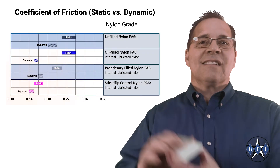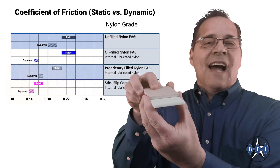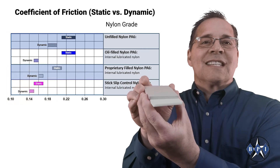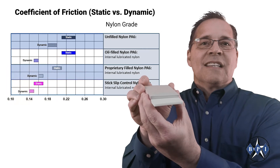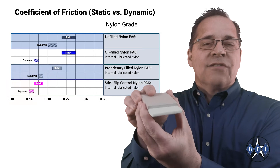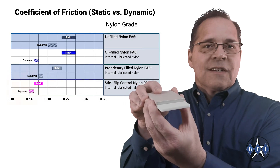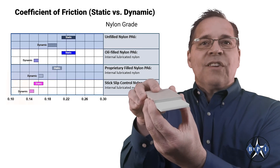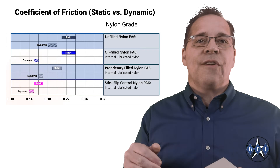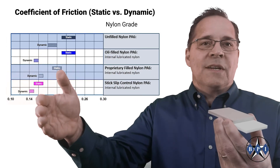Stick-slip is an unwanted phenomenon tied to the coefficient of friction of a system. Stick-slip is the jerking motion of two sliding surfaces. This occurs when the static and the dynamic coefficient of friction are too far apart from each other.